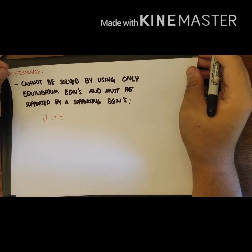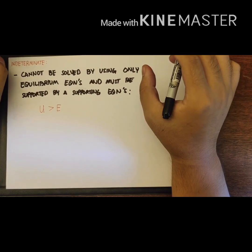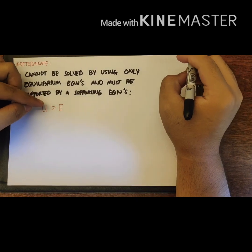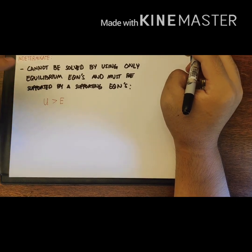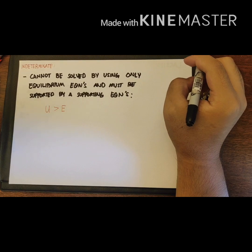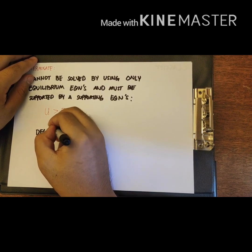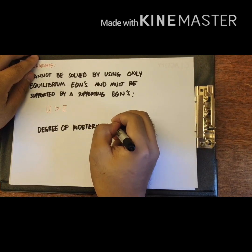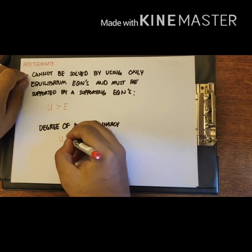Next are indeterminate beams. Indeterminate beams cannot be solved using only equilibrium equations and must be supported by a supporting equation. The formula for classifying a beam as indeterminate is U greater than E. In addition to classifying it as indeterminate, we also determine the degree of indeterminacy, which is calculated as U minus E.